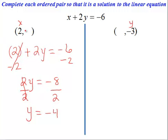So to complete the ordered pair here, we have x is 2, y is negative 4.